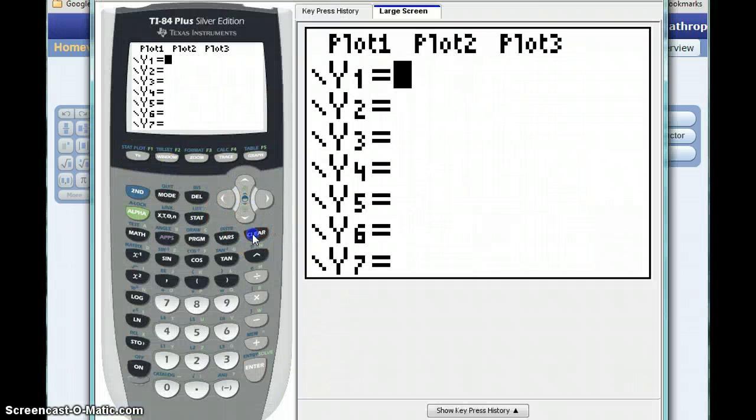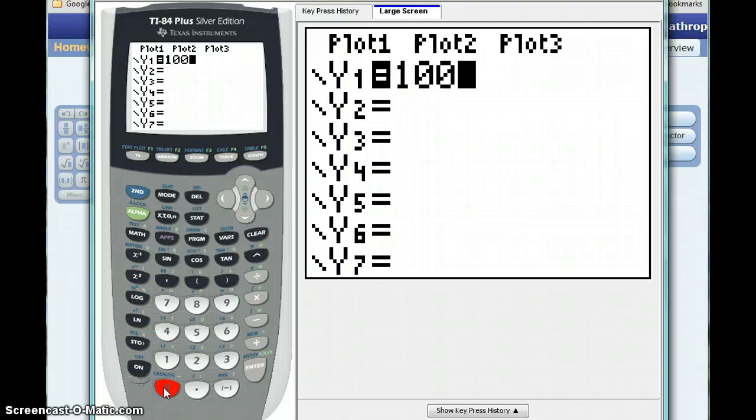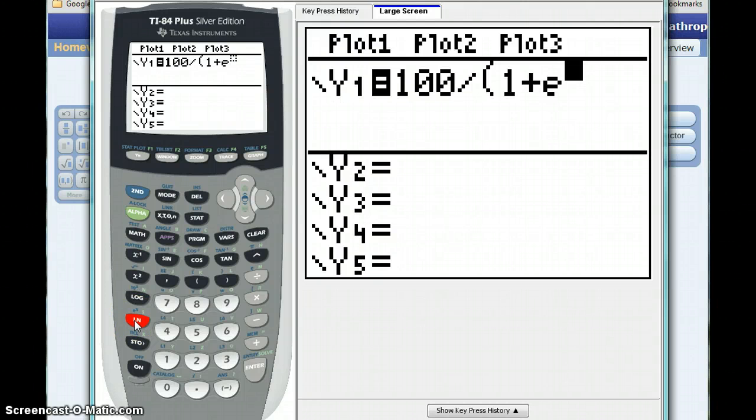Going back to that y equals screen, we can clear the function that we had. Typing in this expression, we'll type in that numerator, and then we'll divide by this entire expression in the denominator. 1 plus, using the second key we can access that e to the x feature. So we get 1 plus e to the negative x, which serves the same purpose as a t here.